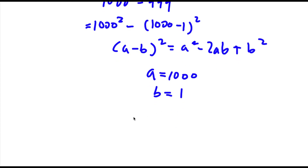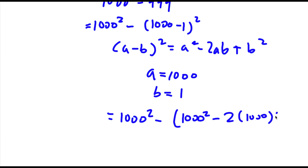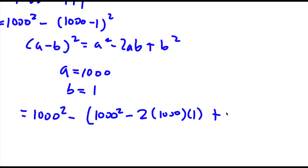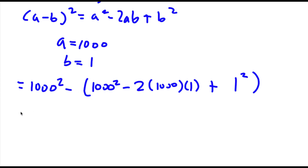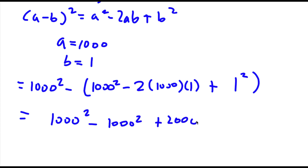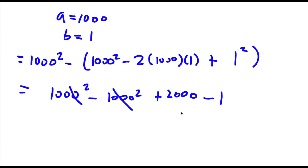So this is going to equal 1000 squared minus (1000 squared minus 2 times 1000 times 1 plus 1). And now this is equal to 1000 squared minus 1000 squared plus 2000 minus 1. Now 1000 squared and 1000 squared cancel out. So all I'm left with is 2000 minus 1, which is equal to 1999.